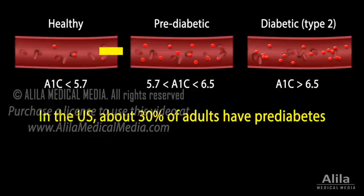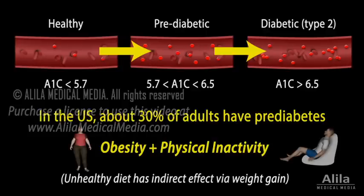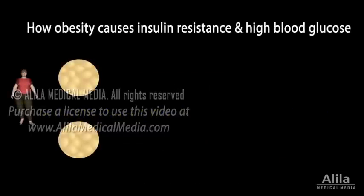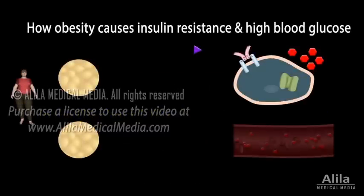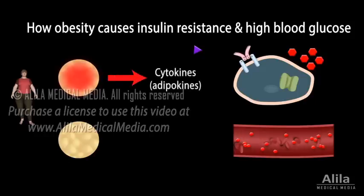Unhealthy lifestyle is the trigger of pre-diabetes and the main driving force behind its progression to type 2 diabetes. The key factors are obesity and physical inactivity. There are at least two ways by which obesity can cause insulin resistance and high blood glucose. First, in obesity, fat cells have to process more nutrients than they can manage and become stressed. As a result, they release inflammatory mediators known as cytokines. Cytokines interfere with the signaling cascade of the insulin receptor, blocking the action of insulin, thereby causing the cells to become less responsive to insulin.